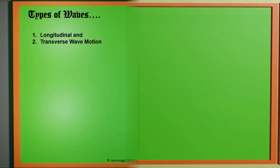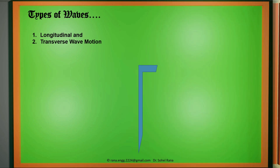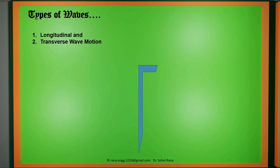There are two types of waves: one is longitudinal wave and another one is transverse wave motion. Let us discuss about longitudinal wave first.